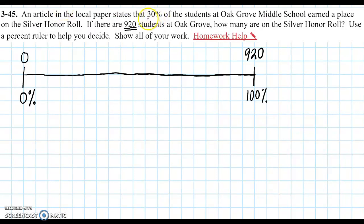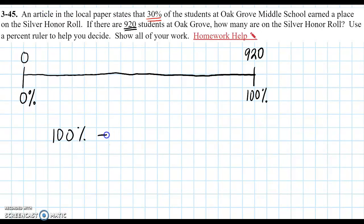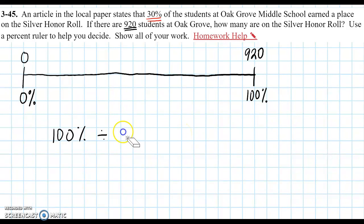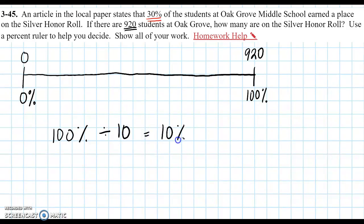Where is that 30% here? It's probably somewhere around here. But let's think: how can I get to 30%? I'm trying to break up this ruler into equal parts and I need to get to 30 somehow. I know that 30 doesn't divide evenly into 100% — 100% divided by 30% gives us 3 and a little bit, so that's not going to work. So let's think: how else can we get to 30%? If I take 100% and divide it into 10 parts, then I can get 10% increments. So let's start by doing that.